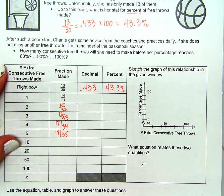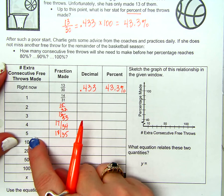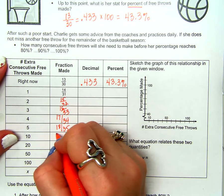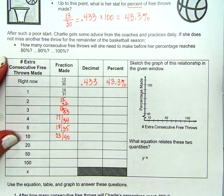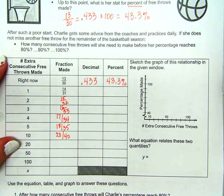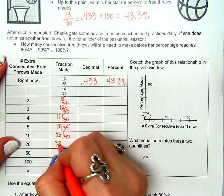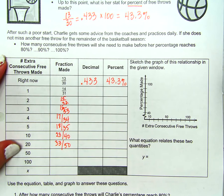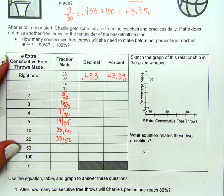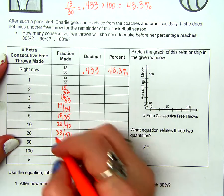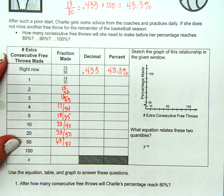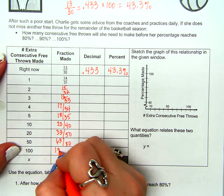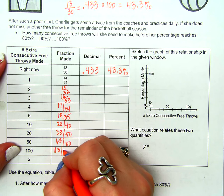Then she makes 5 more than that — we go from 5 to 10 — so we're going to 23 out of 40. Then she makes 10 more than that, so she's at 33 out of 50. Then she makes 30 more: 63 out of 80. Then she makes 50 more: 113 out of 130.